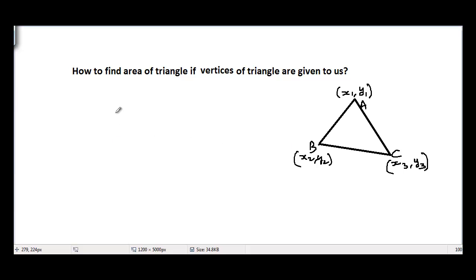vertex B are x2, y2 and the coordinates of vertex C are x3, y3. Now how to find area of such a triangle? We have a direct formula that we can use to find area of such triangle. Area of triangle ABC is equal